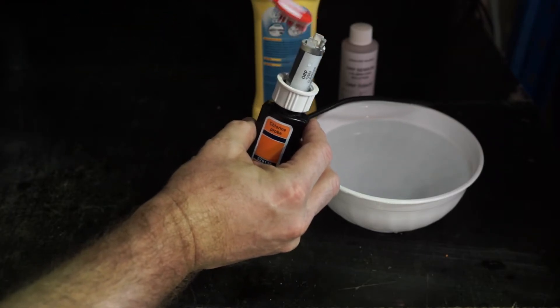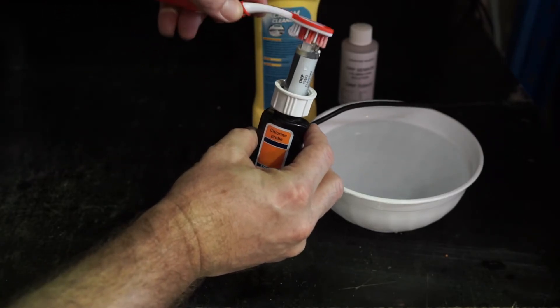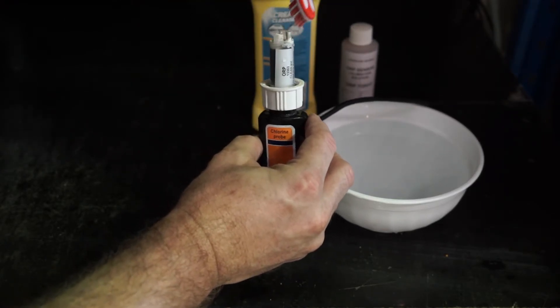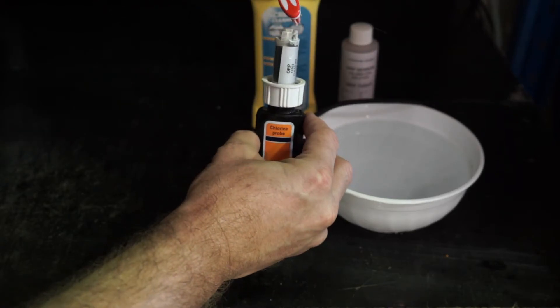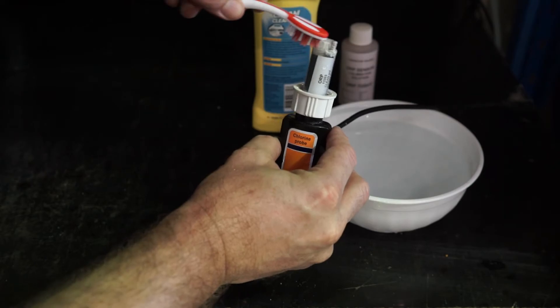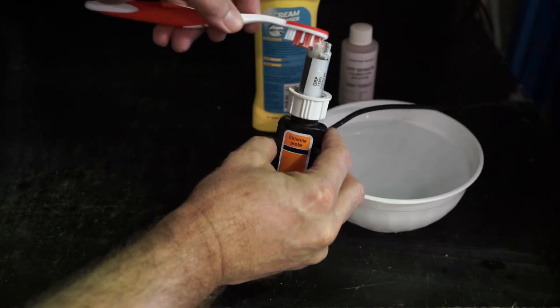Now again with a soft toothbrush or a cotton bud on the electrode as well. Back to the gold tip to make sure we're totally clean.